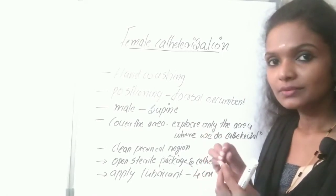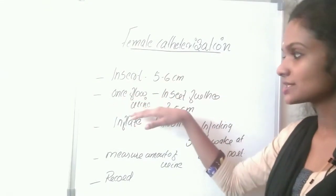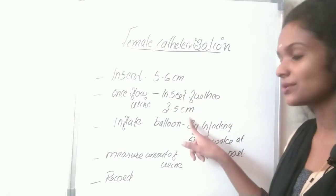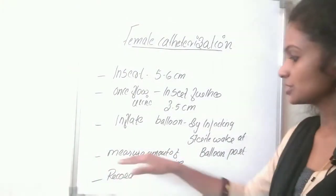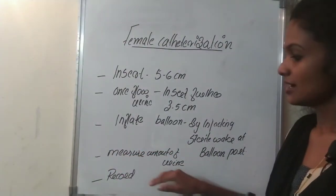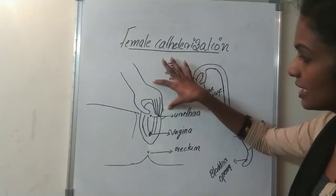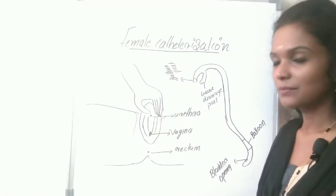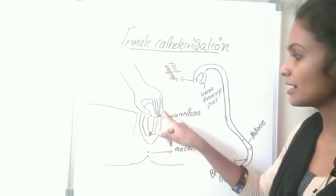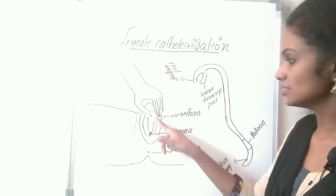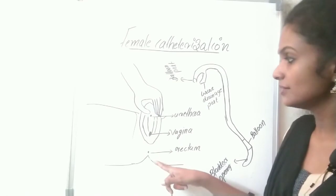Insert 5 to 6 cm of the catheter inside the bladder. Once urine starts to flow, insert a further 3 to 5 cm of catheter. Then inflate the balloon by injecting sterile water through the balloon port. Measure and record the amount of urine expelled. When holding the perineal region, use the thumb and fingers to separate and slightly lift the labia majora to get proper visualization of the urethra opening.